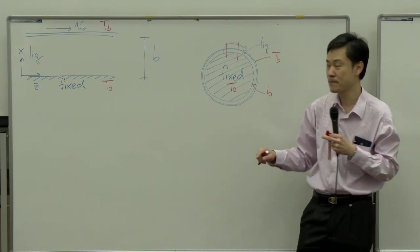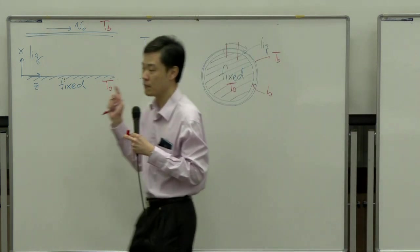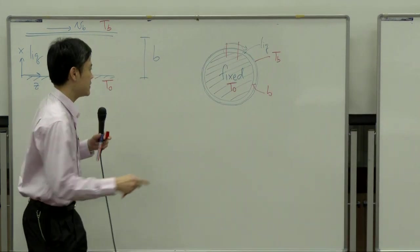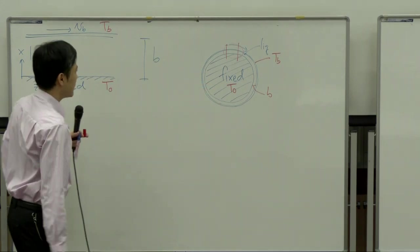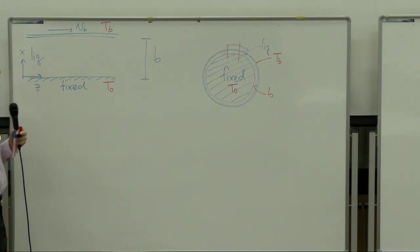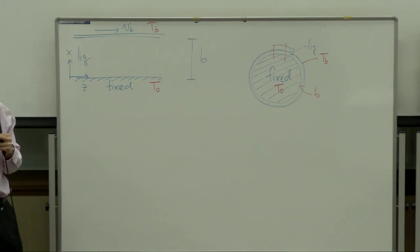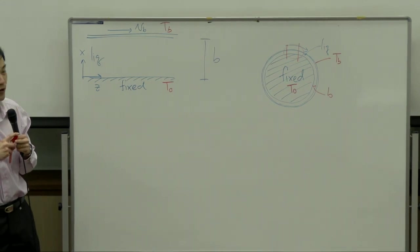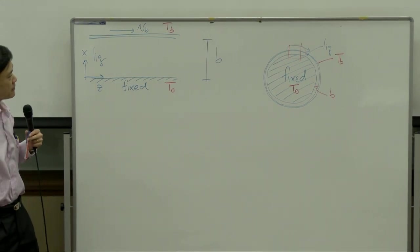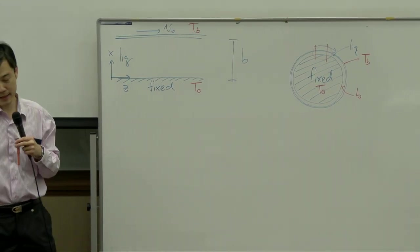This assumption can only be applied when the radius is so large compared to the gap size — just like the Earth. The radius of the Earth is so large compared to the distance from the ground to the air that we can see the floor as flat, even though the Earth is a sphere. Under the same assumption, we will simplify this setup to be like two parallel plates.